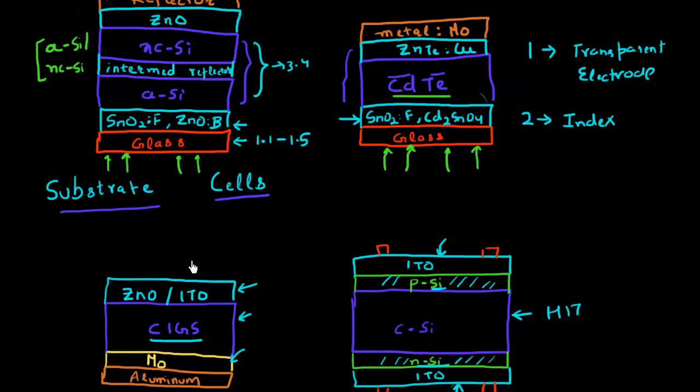And in the substrate configuration, if you're exposing this directly to air, then the refractive index of this TCO material has to be a mean of the refractive index of air, which is 1, and the refractive index of my absorber material, which is high. So it also performs this function of index matching.